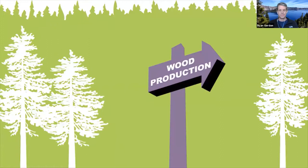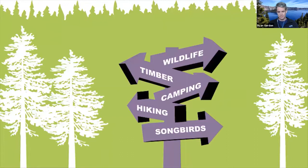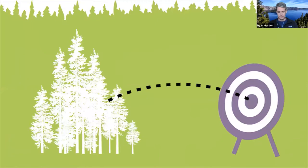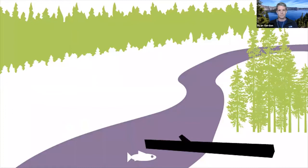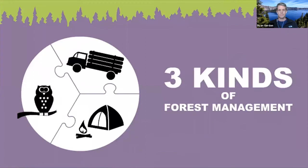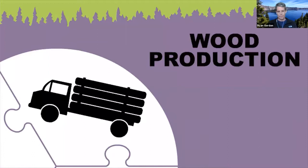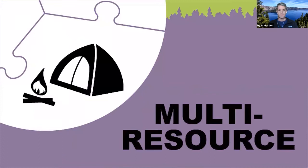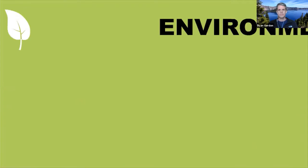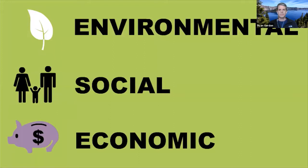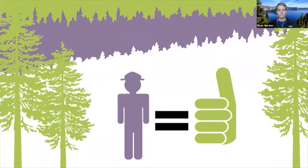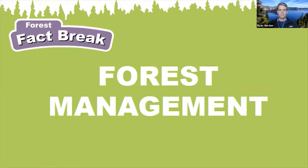Forests are managed for different goals: some for wood products, others for wildlife habitat, and some for a mix of goals. Forest managers figure out what needs to happen to reach those goals — could be planting and growing trees, thinning or harvesting trees, or altering the habitat to favor one species over another. There are three common types of forest management in Oregon: reserve management for older habitat or wilderness; wood production to create the wood supply we use every day; and multi-resource management, a mix of styles covering wood, habitat, recreation, and more. Regardless of what they're managed for, there are environmental, social, and economic benefits from all types of managed forests, ensuring they stay healthy, productive, and sustainable for a long time.